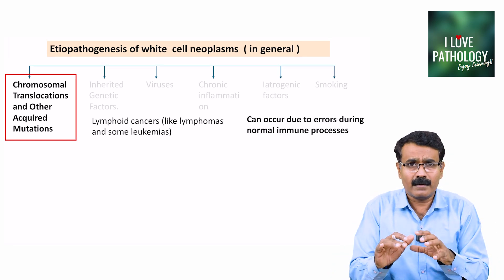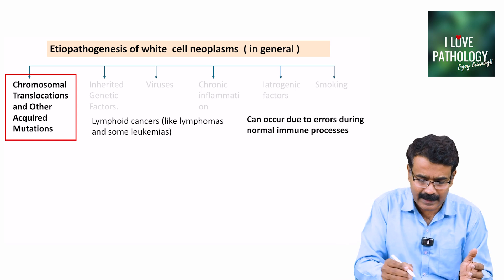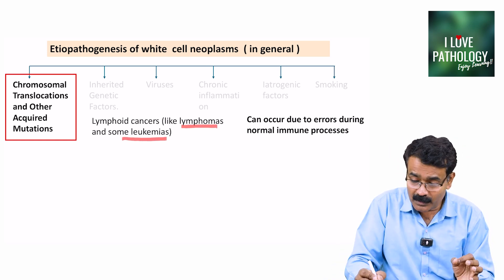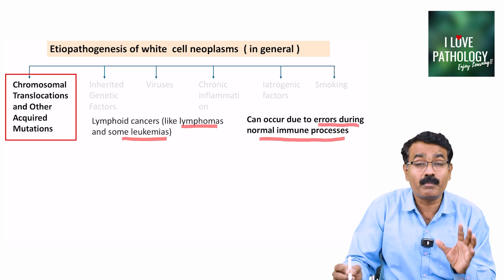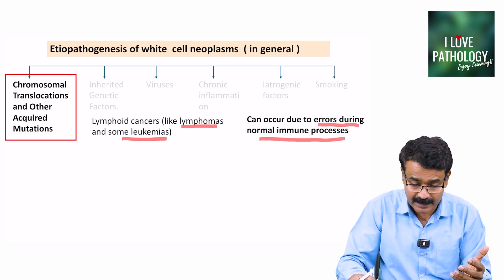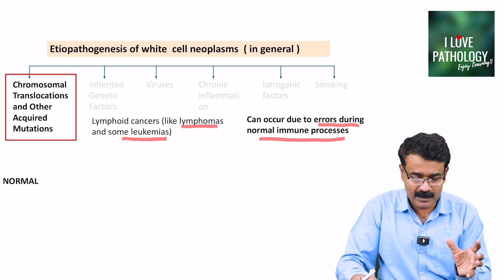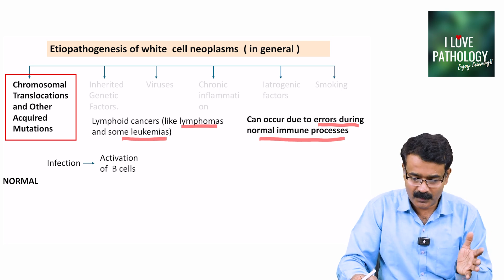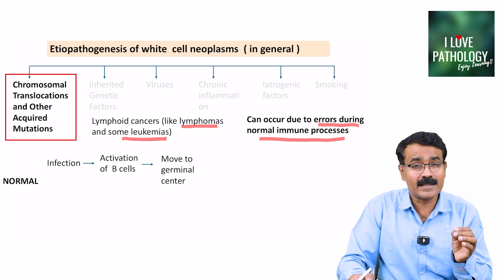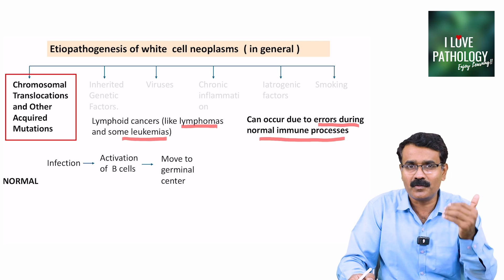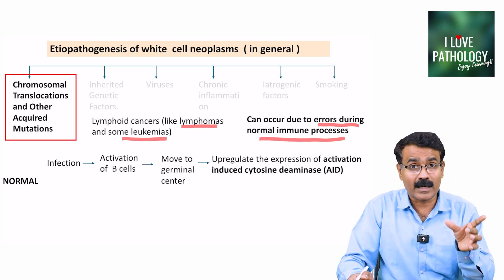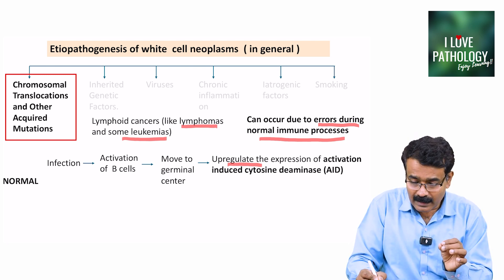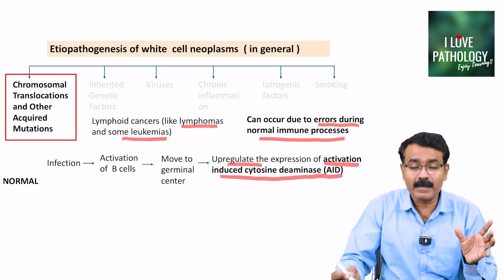Some lymphoid cancers like lymphomas and certain leukemias also occur because of errors during normal immune processes. Normally, whenever there is infection, B cells are activated and move to the germinal center of the lymph node. In the germinal center, there is upregulation of something called activation-induced cytosine deaminase, abbreviated as AID.